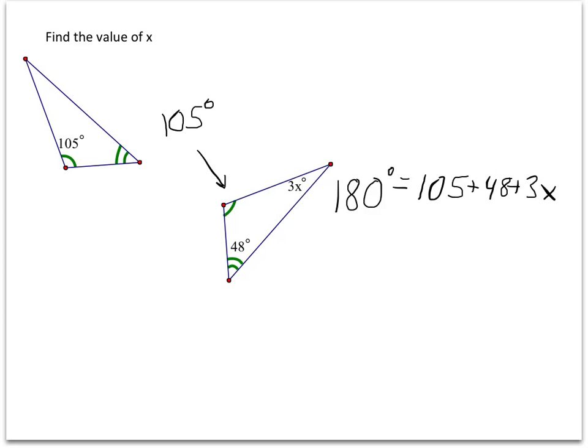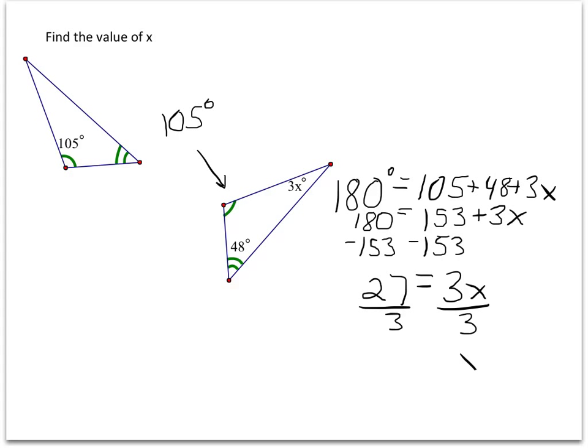105 plus 48 is equal to 153. So, once combining those like terms, we can subtract 153 from both sides. And we get 27 is equal to 3x. Divide both sides by 3. And x is equal to 9. If this problem had asked us to find the angle measures, we would then plug x back in. But since we are only asked to find the value of x, we are done.